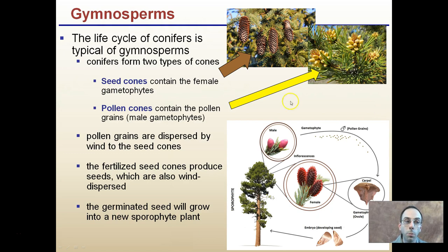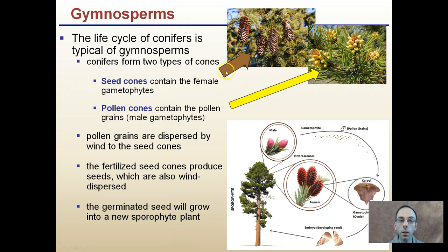The life cycle of conifers is typical of gymnosperms, which is why we use them as our example. Conifers have two types of cones: seed cones contain the female gametophytes, while pollen cones contain pollen grains, which are the male gametophytes. Pollen grains are dispersed by wind to the seed cones, the fertilized seed cones produce seeds which are then dispersed, and the germinated seed grows into a new sporophyte plant.